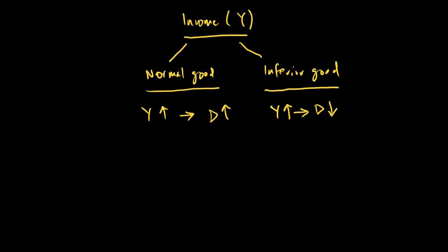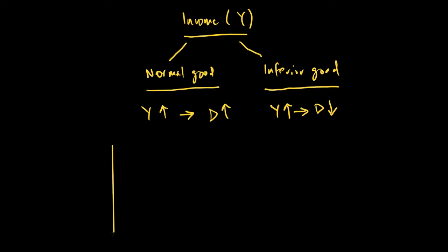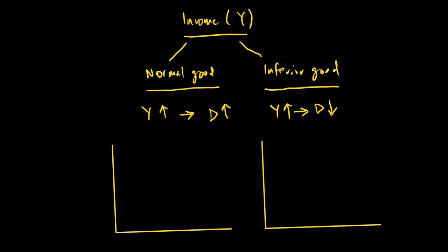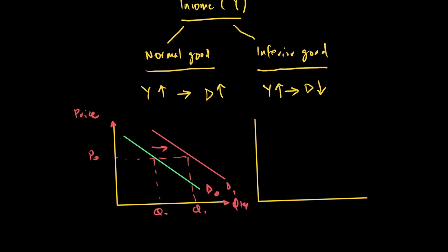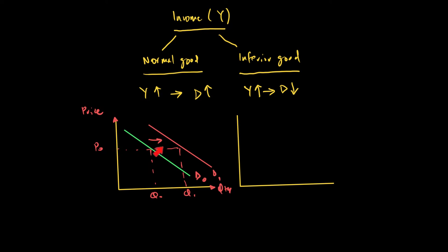How do we show this in a diagram? For normal goods, the demand curve shifts to the right. If this was my demand curve D0, it may shift to D1, meaning that for each and every price level, a consumer is willing and able to buy more. Because it's a shift of the demand curve, we call it a non-price factor — it's not price making us buy more, it's a rise in income. This could be demand for foreign vacation.